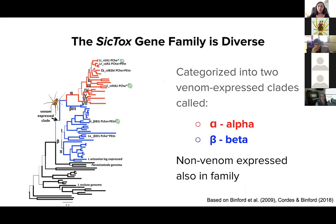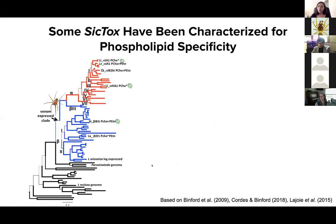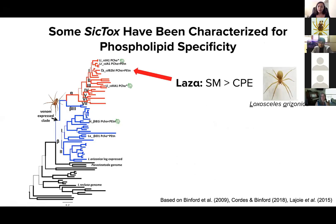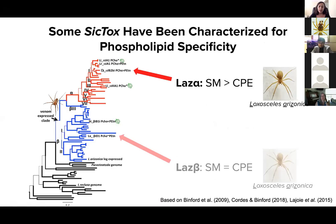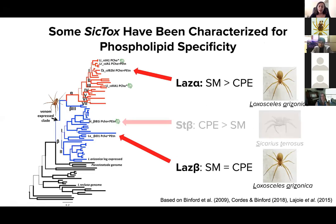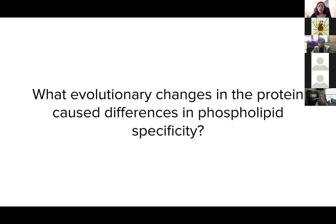The CICTOX gene family is incredibly diverse. Dr. Binford and colleagues have worked to categorize this family into two Venom Express clades: alpha in red and beta in blue. This family also contains non-Venom Express members in black at the bottom. Many of these CICTOX proteins have been characterized for phospholipid specificity. Las-alpha from the Loxosceles arizonica spider prefers SM over CPE phospholipids. Las-beta, amazingly from the exact same spider, can act on both SM and CPE. And ST-beta from the Sicarius taurosis spider prefers CPE over SM. This work takes a more zoomed-in focus on what evolutionary changes have occurred in these proteins that account for their differences in specificity.